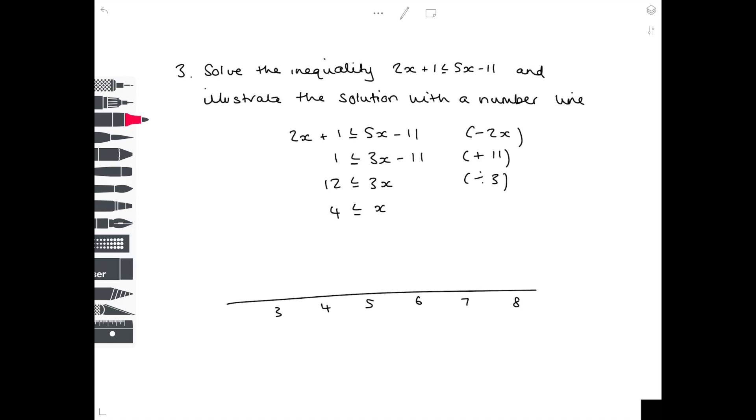So x has to be greater than or equal to 4. So we have our 4 here. Draw an arrow in the correct direction and we color in the circle to show that it's at least equal to it.